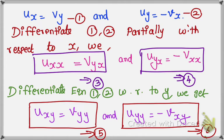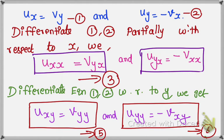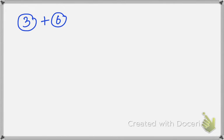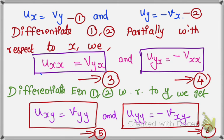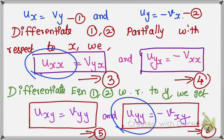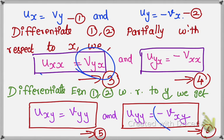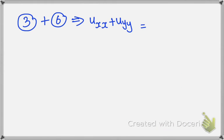Now we add equations 3 and 6. Adding the left-hand sides: Uxx plus Uyy. Adding the right-hand sides: Vyx plus minus Vxy. We know that Vyx can be written as Vxy by interchanging the order of partial differentiation. So the right-hand side becomes Vxy minus Vxy.